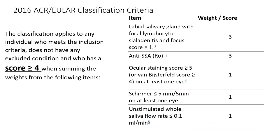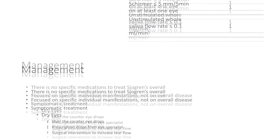Once going through those, there is a criteria used to classify — not diagnose — Sjögren's, and a lot of these are testing in nature. The one to focus on in particular is the antibody anti-SSA, also known as anti-Ro. If that's positive, it's very suggestive in the right clinical setting. The other tests are about looking for dryness in a very objective way in the eyes or mouth, or a salivary gland biopsy, which is more invasive. So we try to use more non-invasive testing day-to-day if we can.